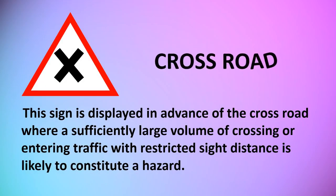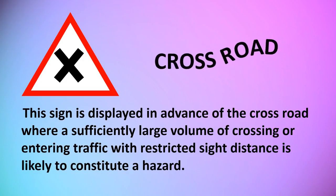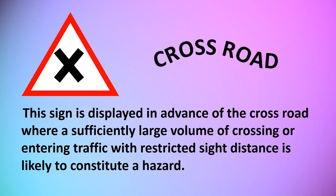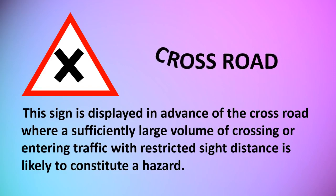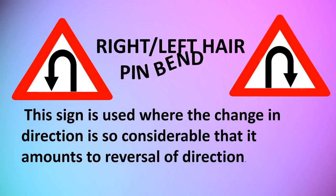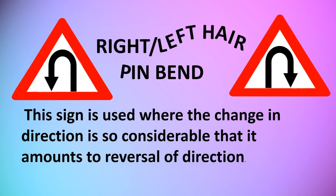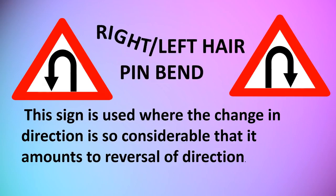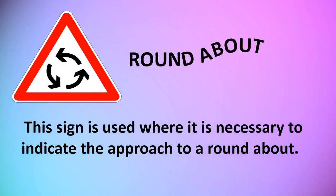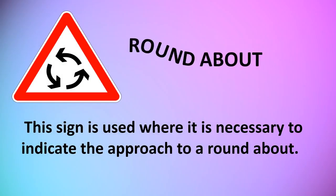Crossroad: this sign is displayed in advance of the crossroad where a sufficiently large volume of crossing or entering traffic with restricted side distance is likely to constitute a hazard. Right or Left Hairpin Bend: this sign is used where the change in direction is so considerable that it amounts to a reversal of direction. Roundabout: this sign is used where it is necessary to indicate the approach to a roundabout.